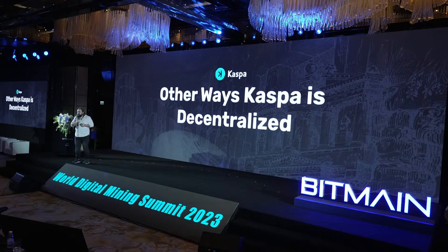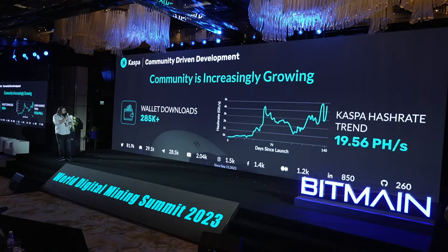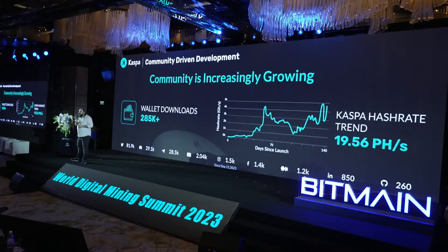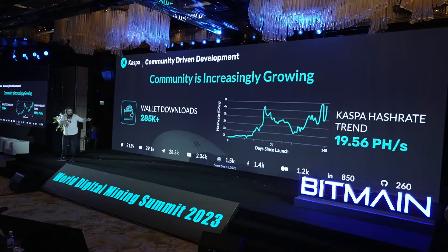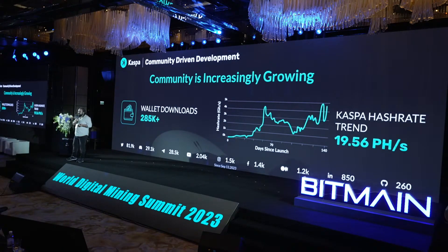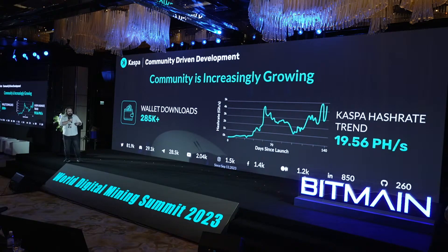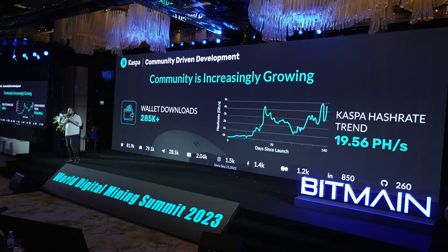In a nutshell, other ways in which Caspa is decentralized: we have a continuously increasing community, which is crucial because we are community-driven. We have a lot of wallet downloads, and you can see how the hash rate grew in the first days. In the first weeks we were wondering if we'd ever reach a gigahash rate — within two months we were already at 4 terahash. This slide says the current hash rate is 20 petahash, but actually since I made it, we're already around 24 petahash. The hash rate keeps growing tremendously.